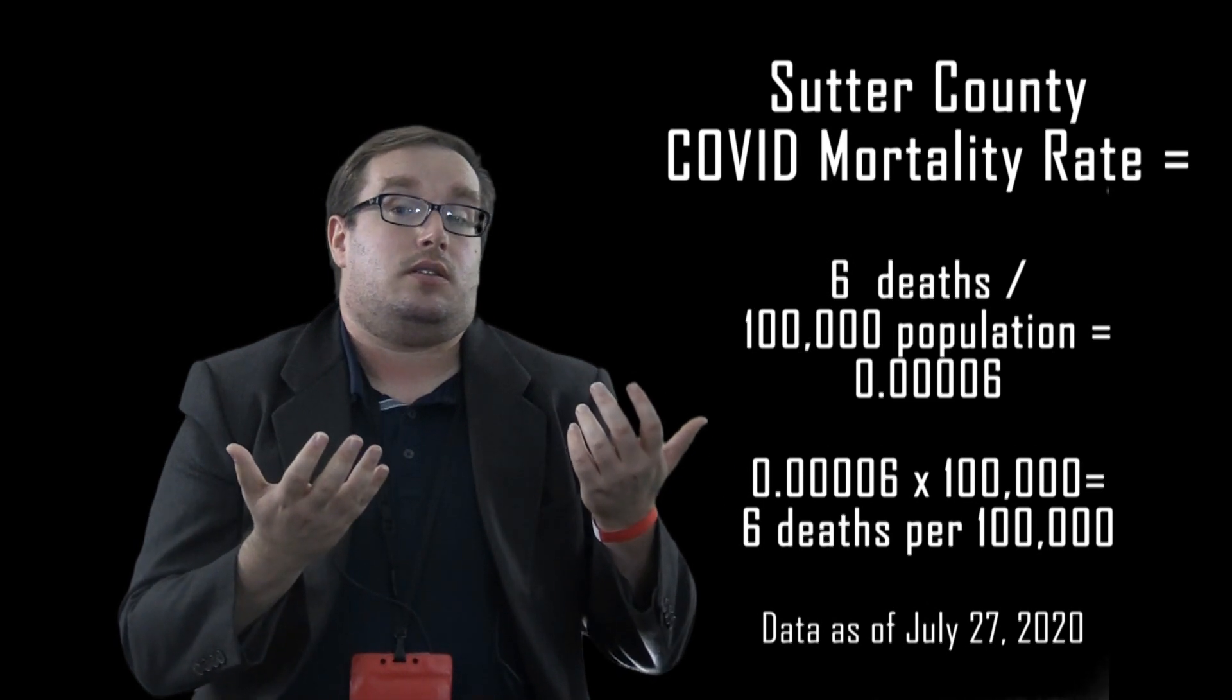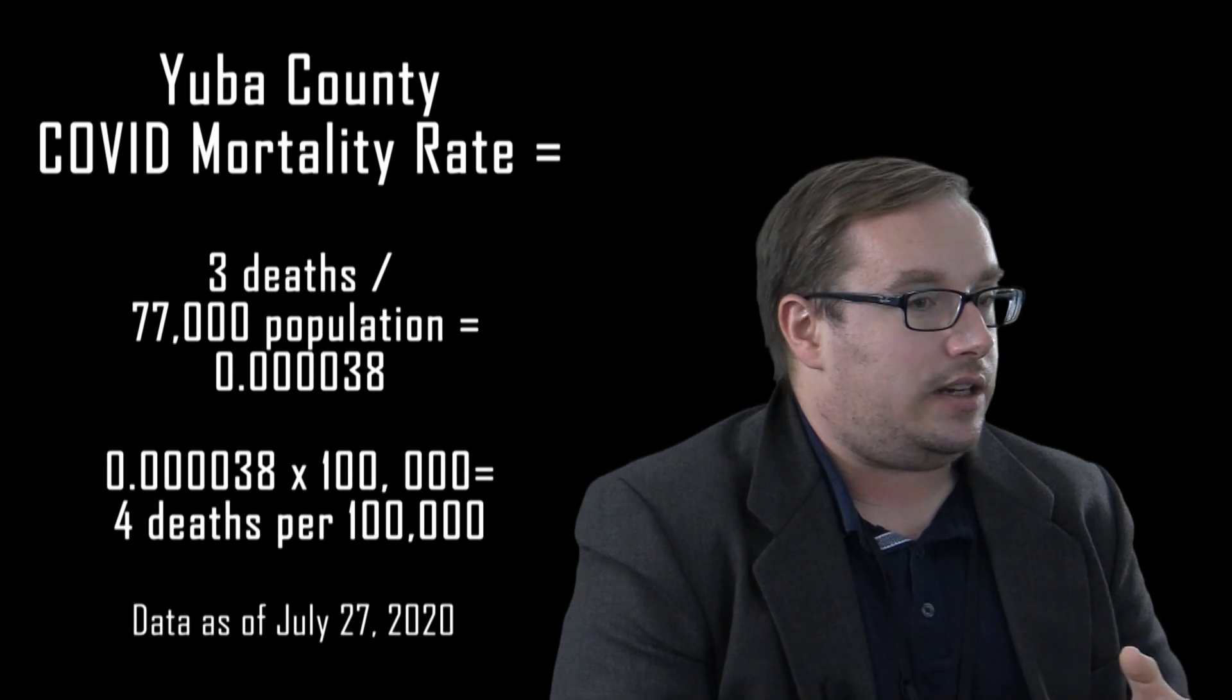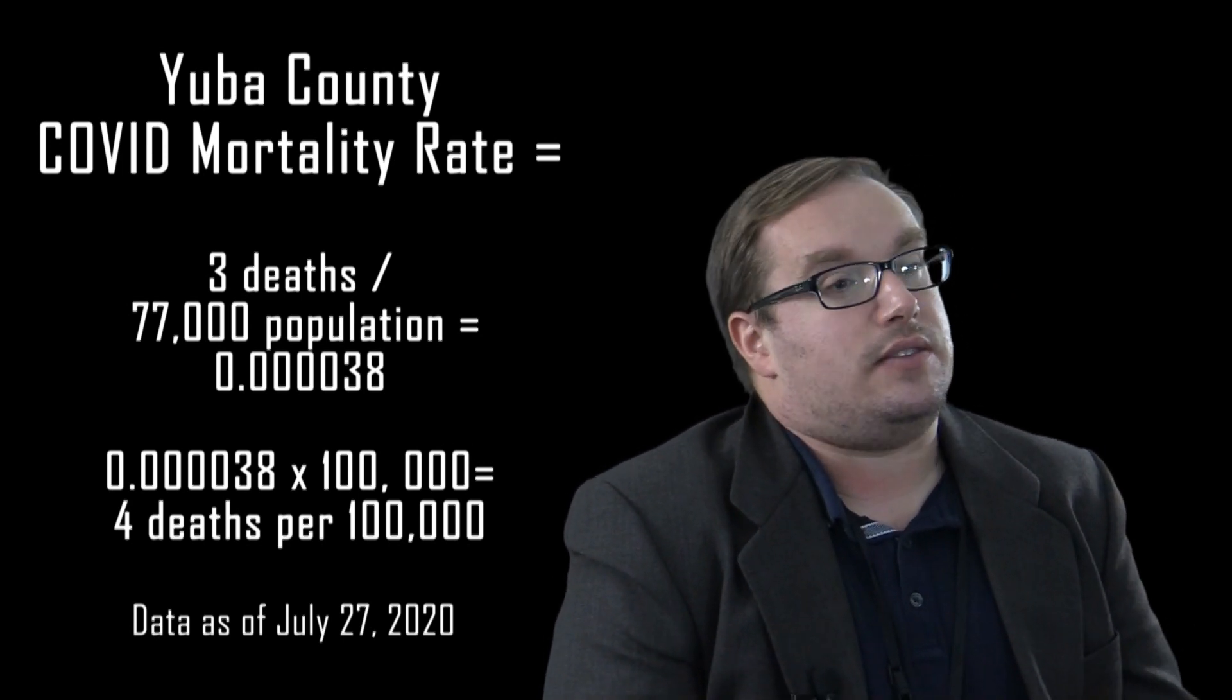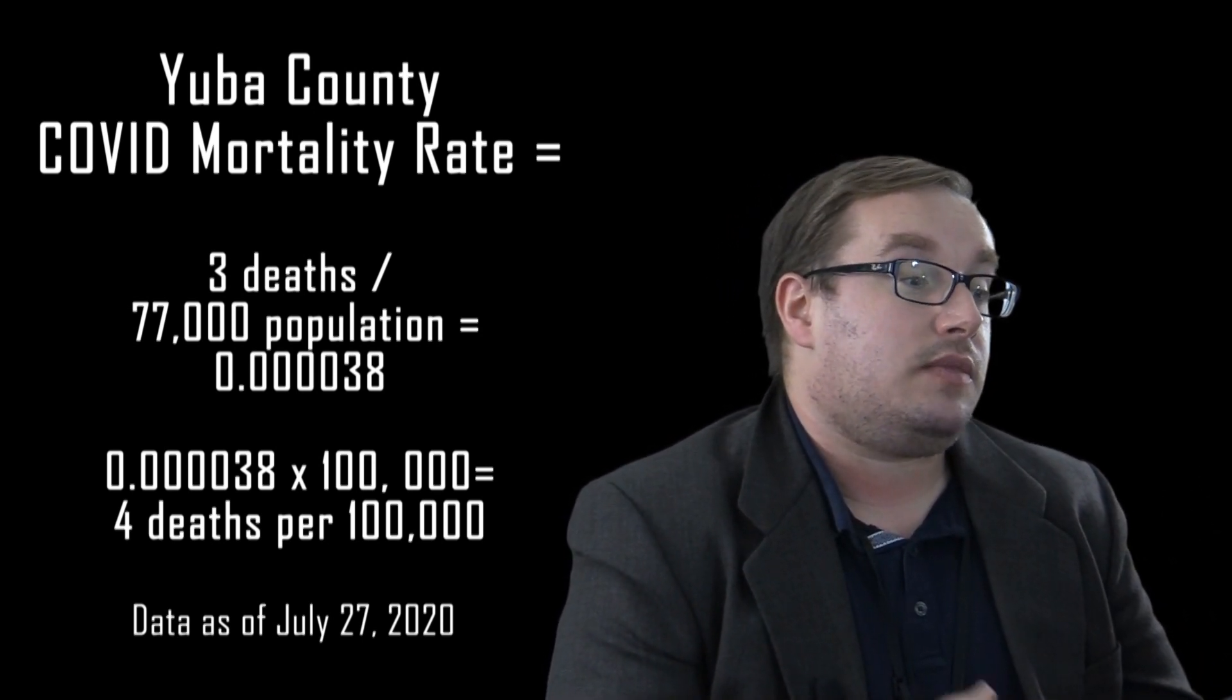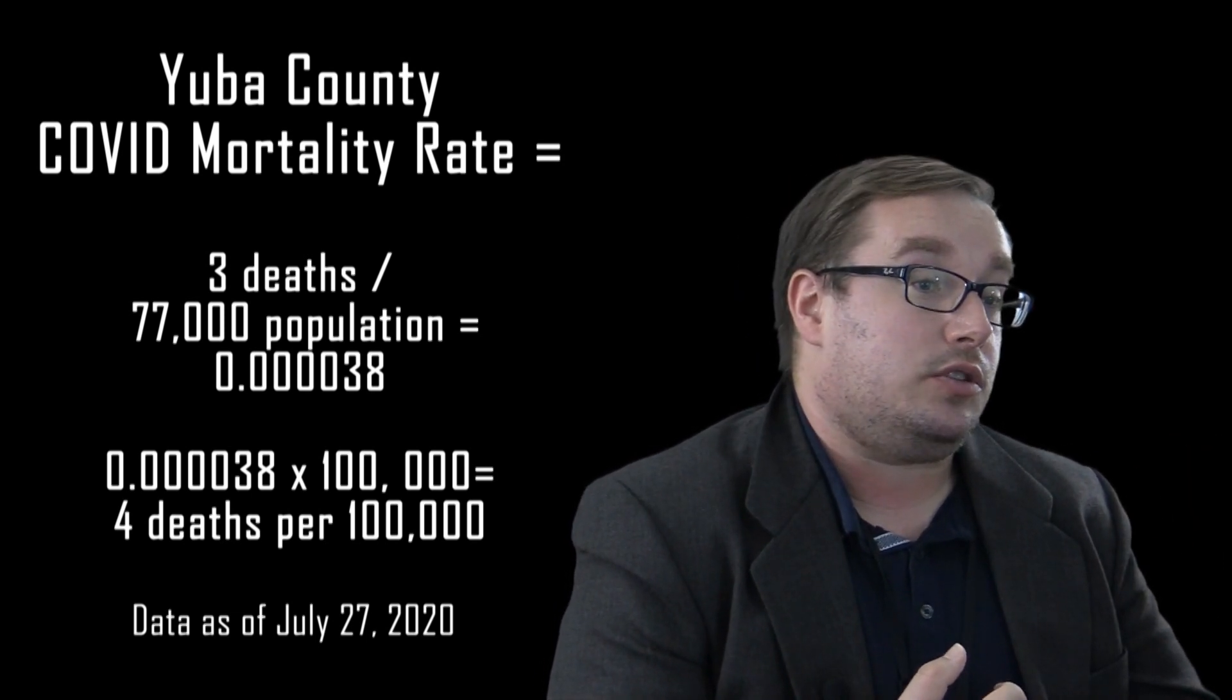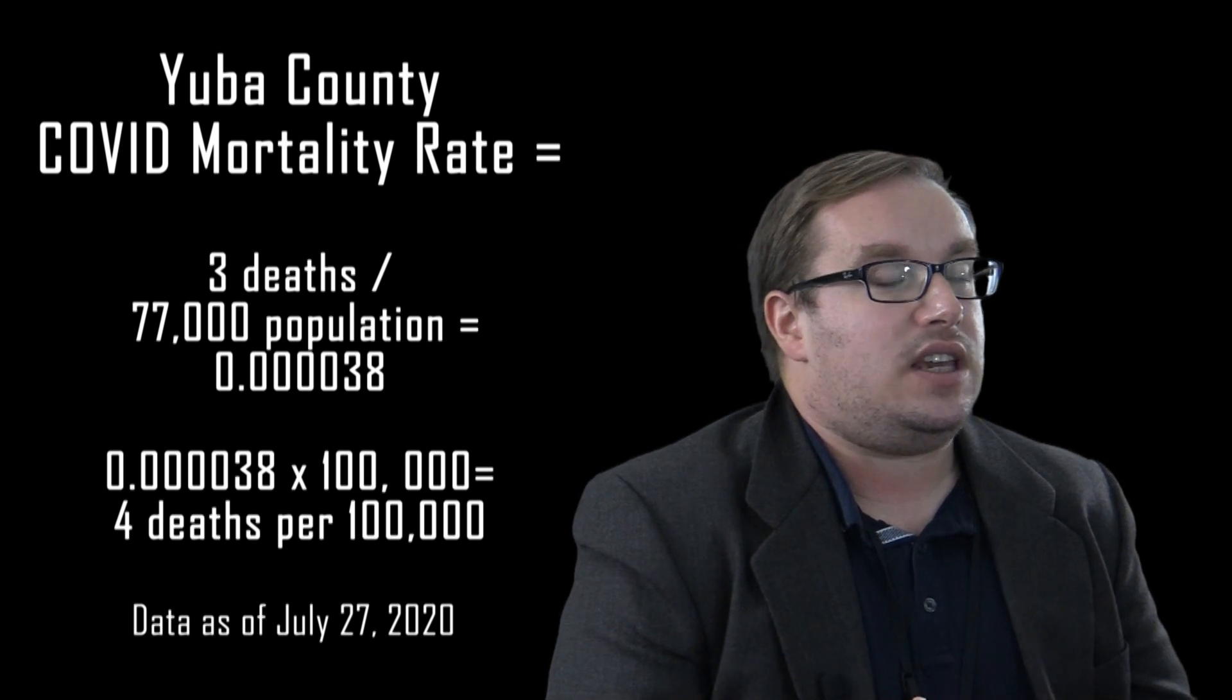What about the Yuba County side? The math's a little more complicated because there's not a hundred thousand people in Yuba County, there's seventy-seven thousand people in Yuba County. So three people in Yuba County have died divided by seventy-seven thousand people times a hundred thousand people, and you get about 3.8 or roughly four. So you can see that's how deaths from coronavirus differ between Sutter County and Yuba County. Sutter County's got about a third more than Yuba County.